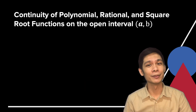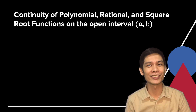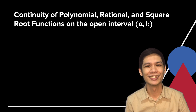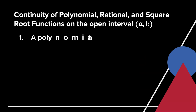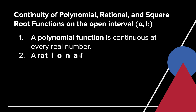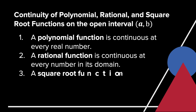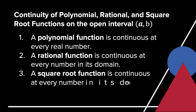How do we know if a polynomial, rational, or square root function is continuous on an open interval? A polynomial function is continuous at every real number. A rational function is continuous at every number in its domain. A square root function is continuous at every number in its domain.